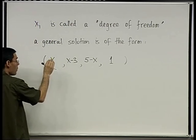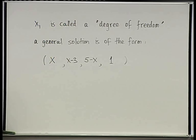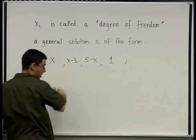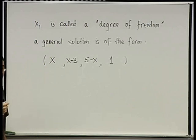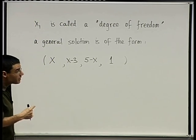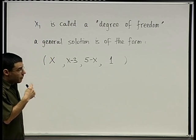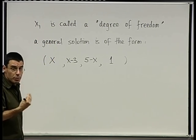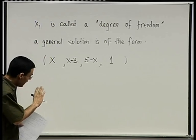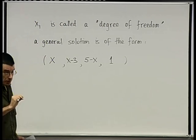Any solution to this system of equations is going to be of this form, where x can be anything you want, as long as all the entries are consistent with that. We could have guessed that there's going to be a degree of freedom here because there were four unknowns and only three equations.